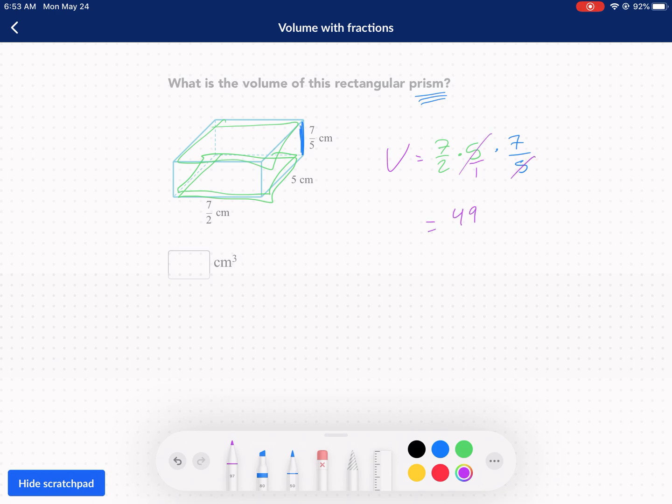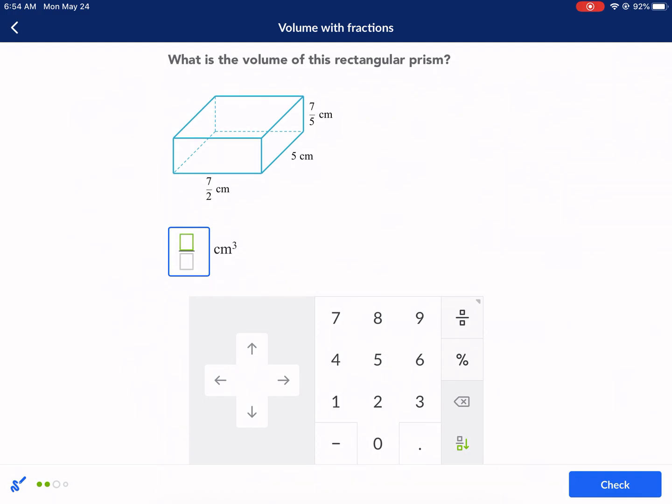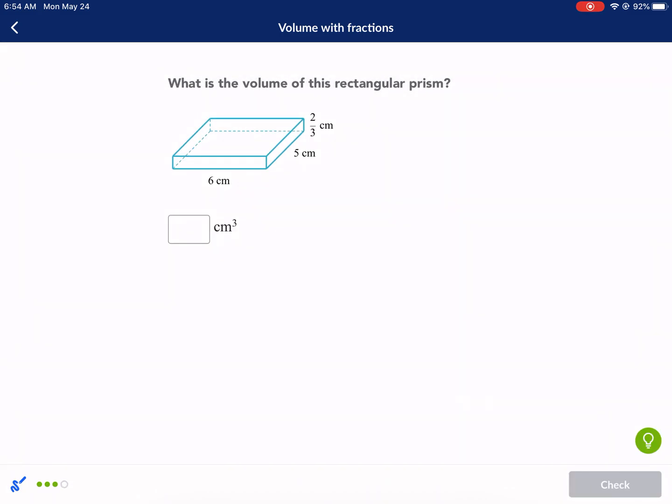We have 7 times 7 in the top, 2 in the bottom, 2 times 1 in the bottom, 49/2. And we're just going to express it like that. 49/2. Got it. Centimeters cubed. Don't forget about the units.